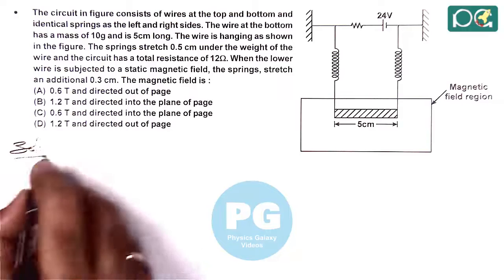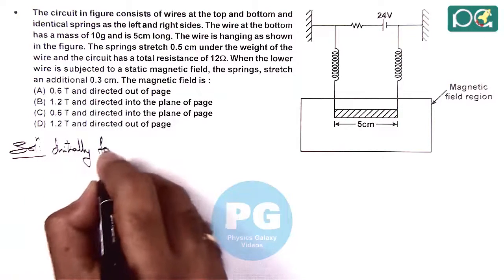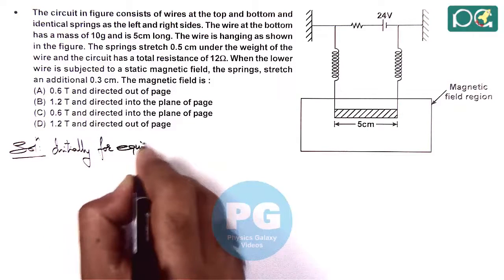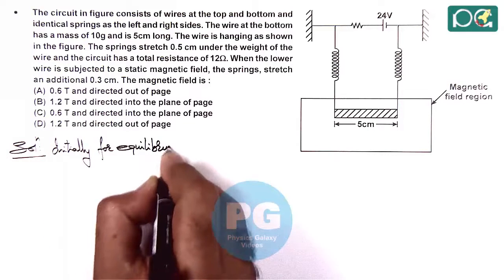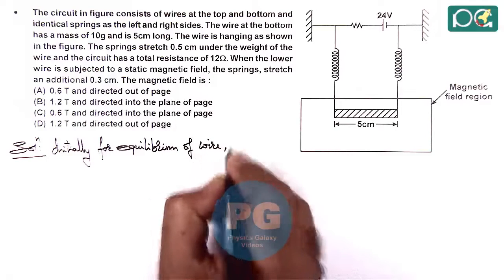So first we can write: initially, for equilibrium of the wire here, we use...